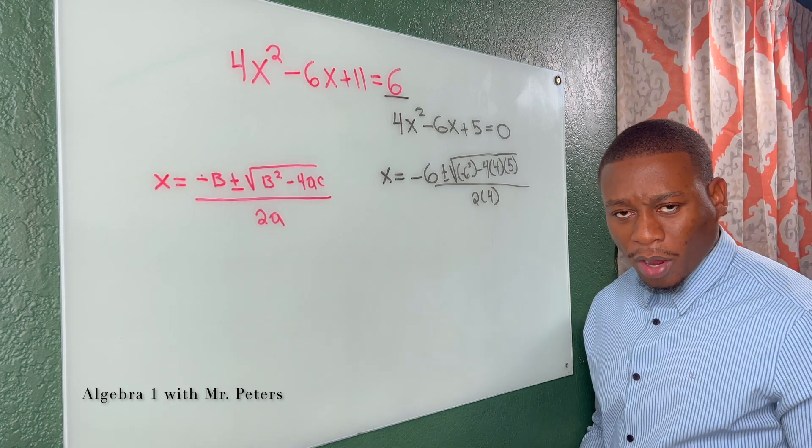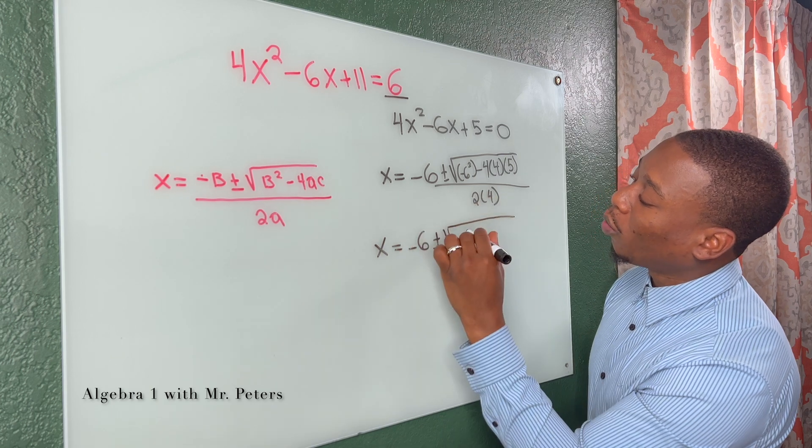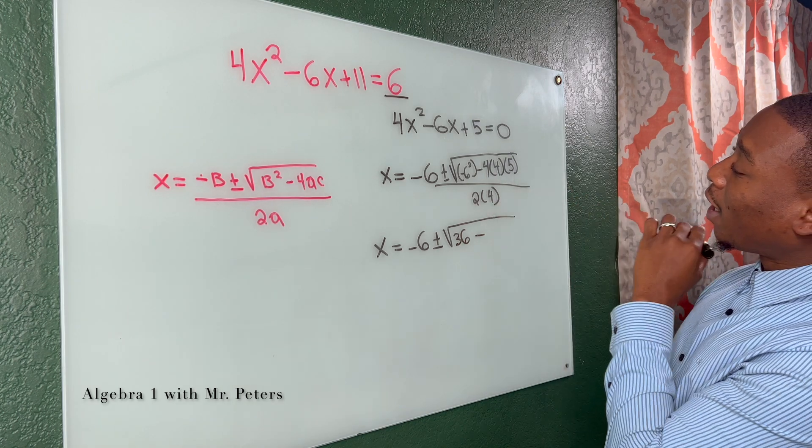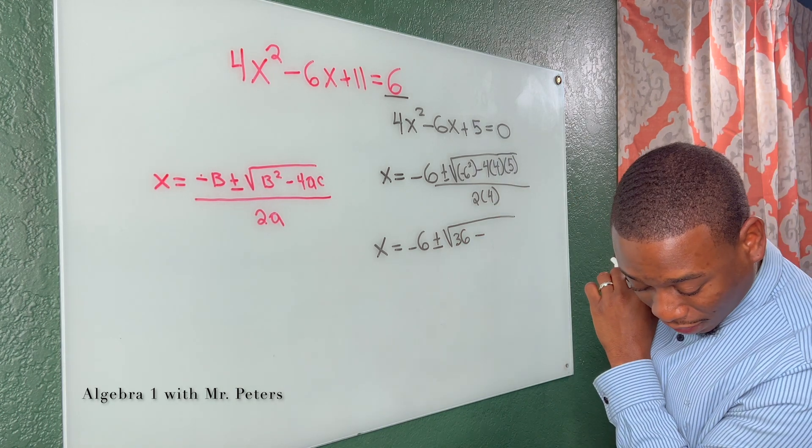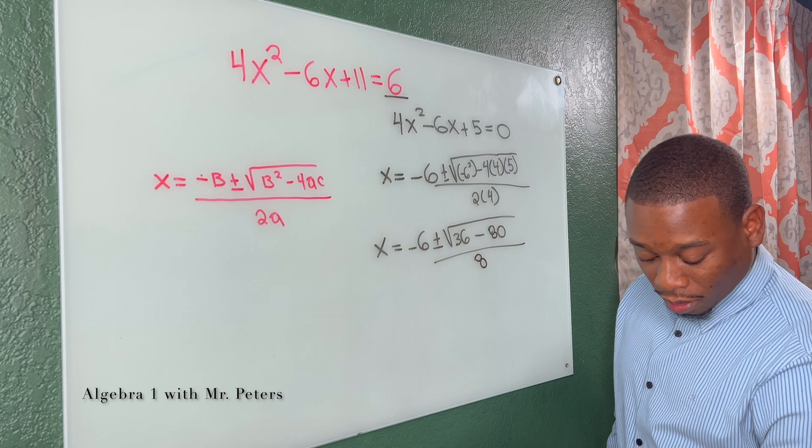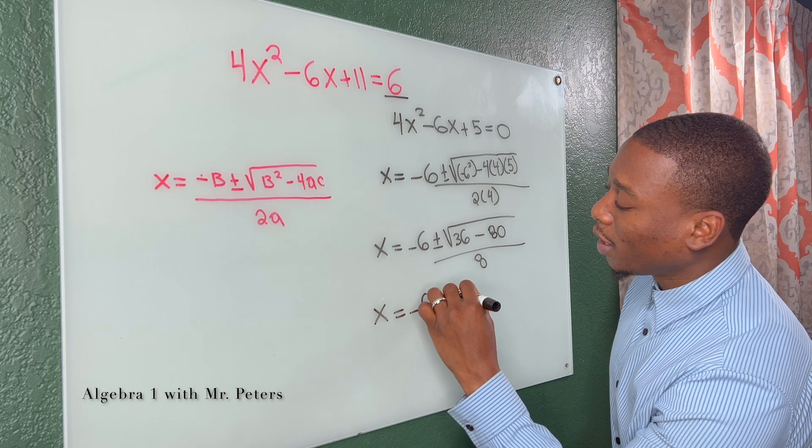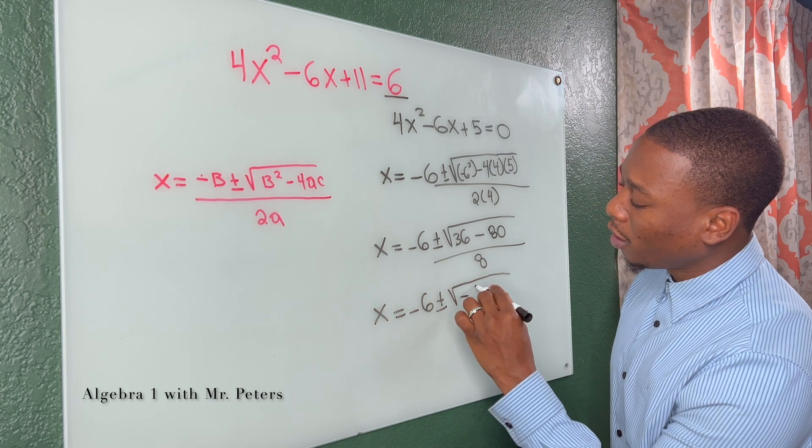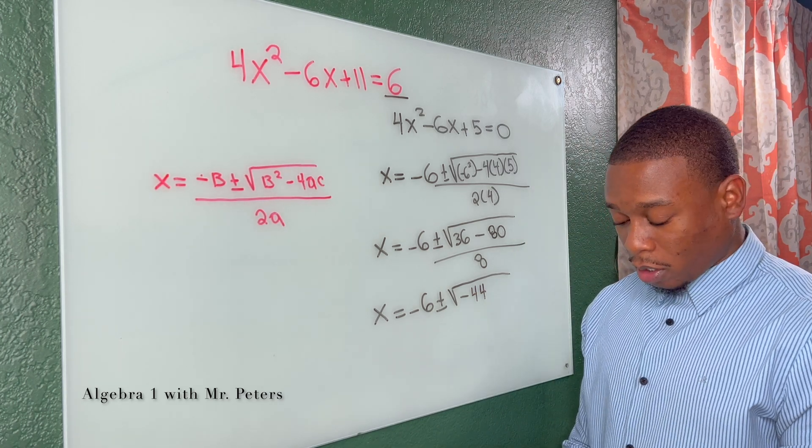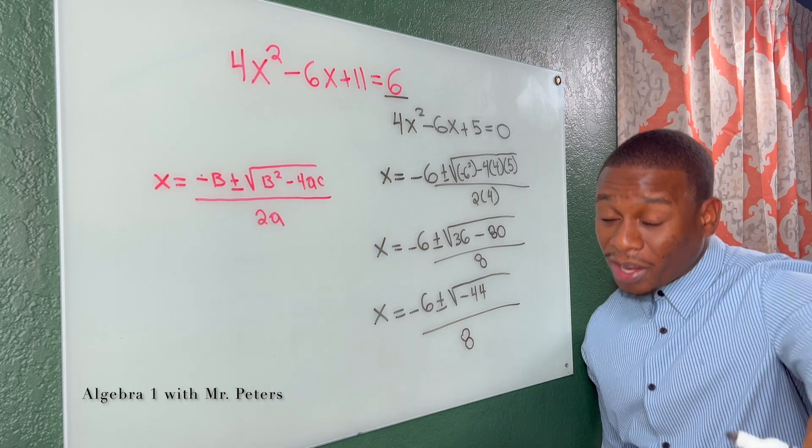So now that we properly substitute, let's simplify. We have negative six plus or minus, and now we're going to have 36 minus, four times five is 20 times four is 80, all over eight. So now at this step, guys, we're going to combine this and we're going to have X is equal to negative six plus or minus the square root of negative 44 all over eight.